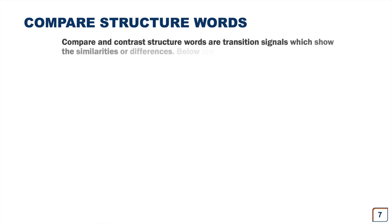When we need to write a compare and contrast essay, we need to know certain structure words. Compare and contrast structure words are transition signals which show the similarities or differences. Below are some common examples.